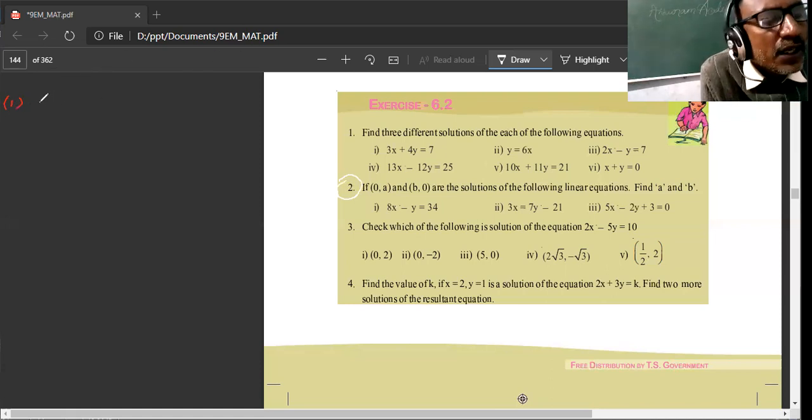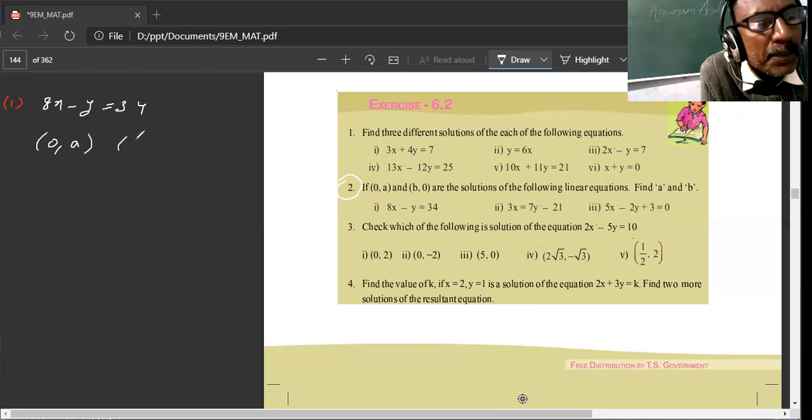If we put our equals to 8x minus y equals to 34. So, solution set is (0,a) and (b,0). So, we will find out this a b value.